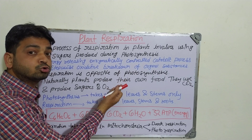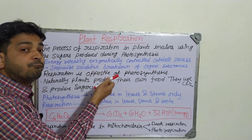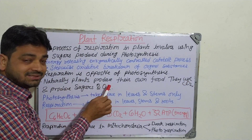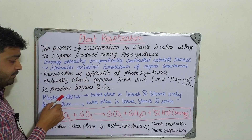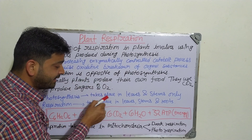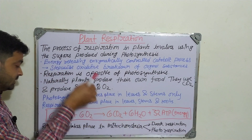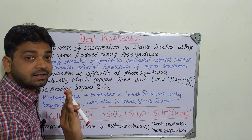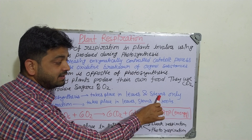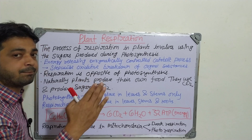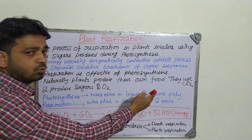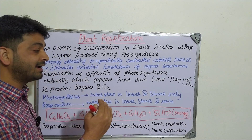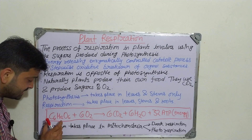Naturally, plants produce their own food — that's why they are autotrophic organisms. Using sunlight they produce carbohydrate: they use carbon dioxide and produce sugar and oxygen, as we saw in photosynthesis. Photosynthesis takes place in the leaves and stems only, whereas respiration takes place in the leaves and also in the roots. Roots do not have photosynthesis; stems can have it where chlorophyll is present. Respiration occurs wherever cells are breaking down sugar.